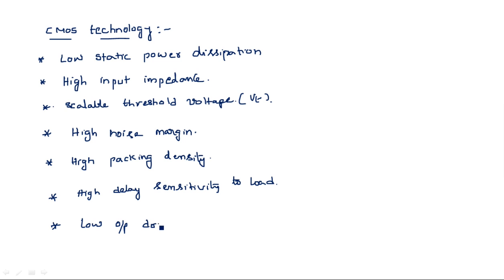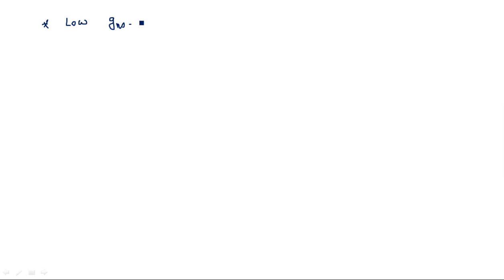CMOS also has low output drive current and low transconductance gm, where gm is proportional to Vin. This low gm is a notable limitation of CMOS technology.